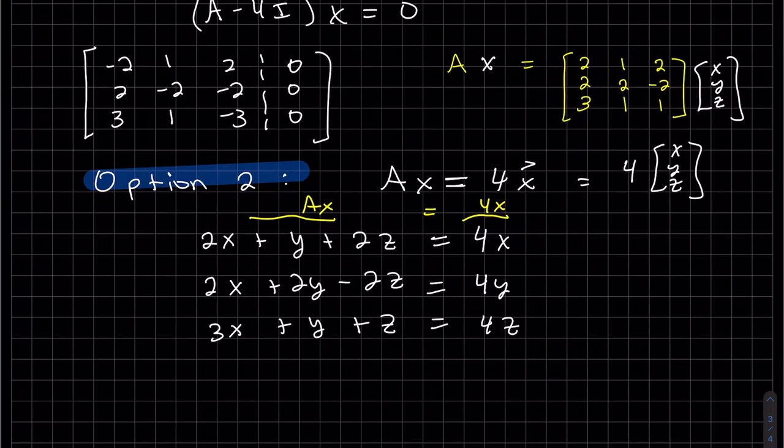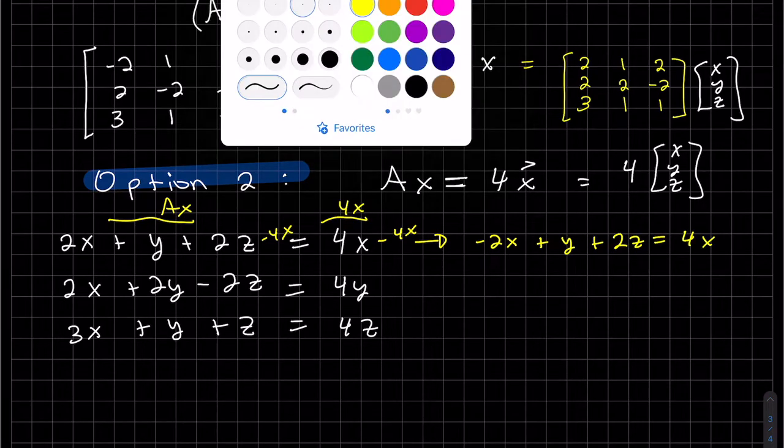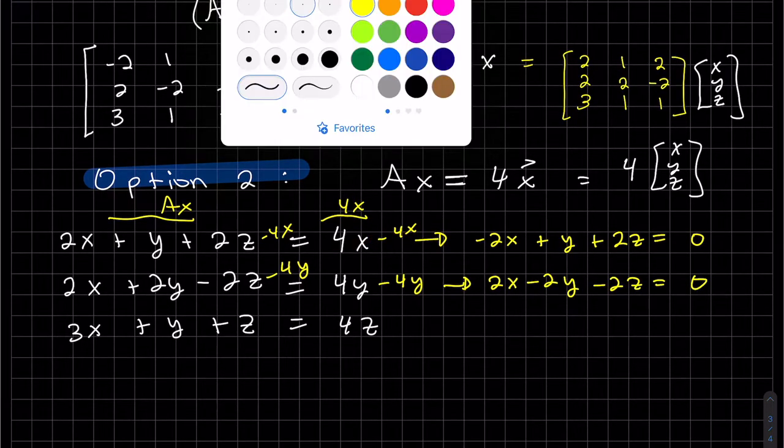So we want to take each of these equations and get 0 on the right. So all I do here is subtract 4x on both sides. So I'm only combining 2x minus 4x. Here I'm subtracting 4y on both sides—we get 0 there. 4x minus 4x is 0, that's why we're doing this. And on this one we're subtracting 4z.